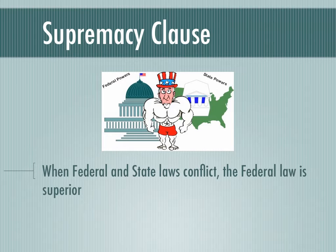The first of these is the Supremacy Clause. Everything on here is quite commonly tested. The Supremacy Clause states that when federal and state laws conflict — so the federal law says one thing and the state law says the opposite — the federal law is superior. For example, we have a federal law saying marijuana is illegal, while states like Colorado and Washington have legalized it. Those two laws conflict, and if it went to the Supreme Court, they would likely strike down the state laws because federal law is superior according to the Supremacy Clause, every time.